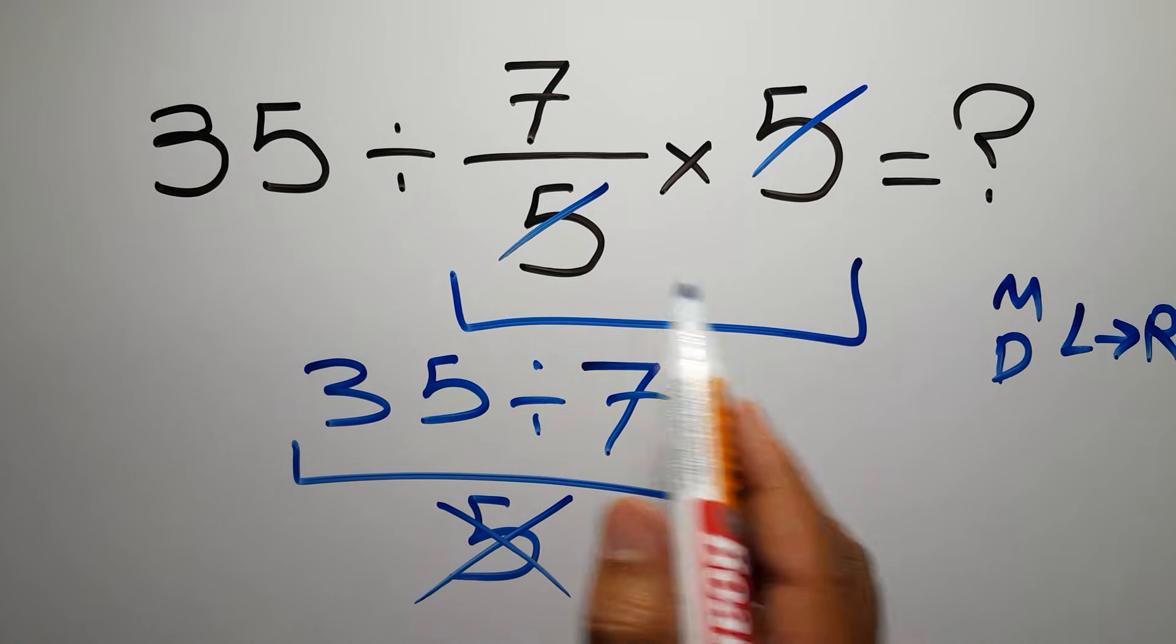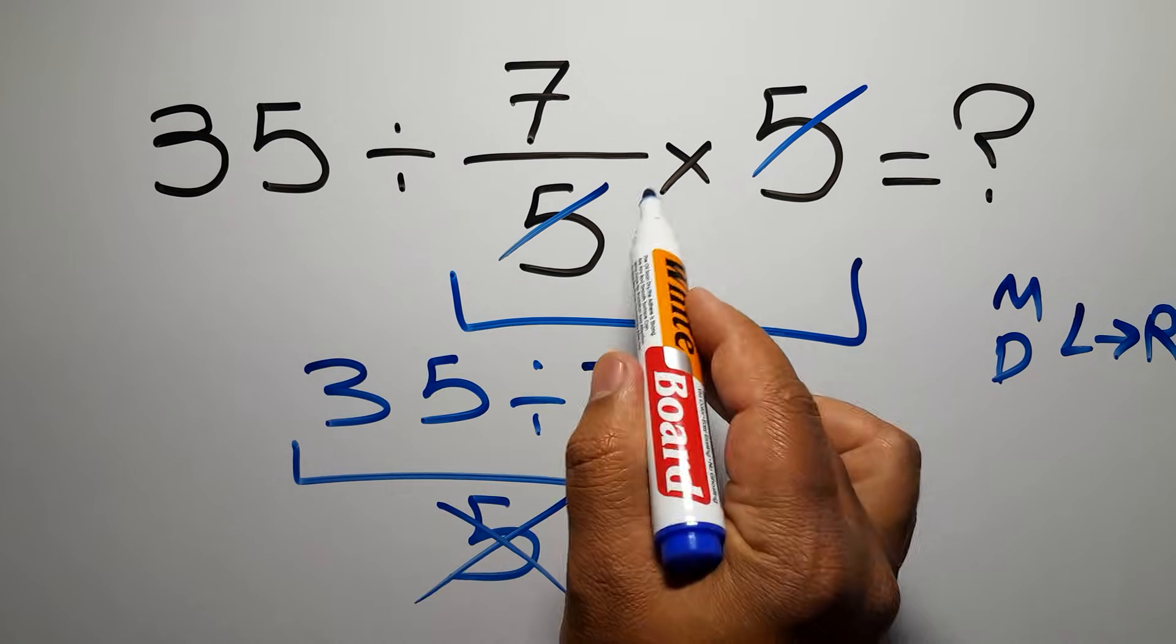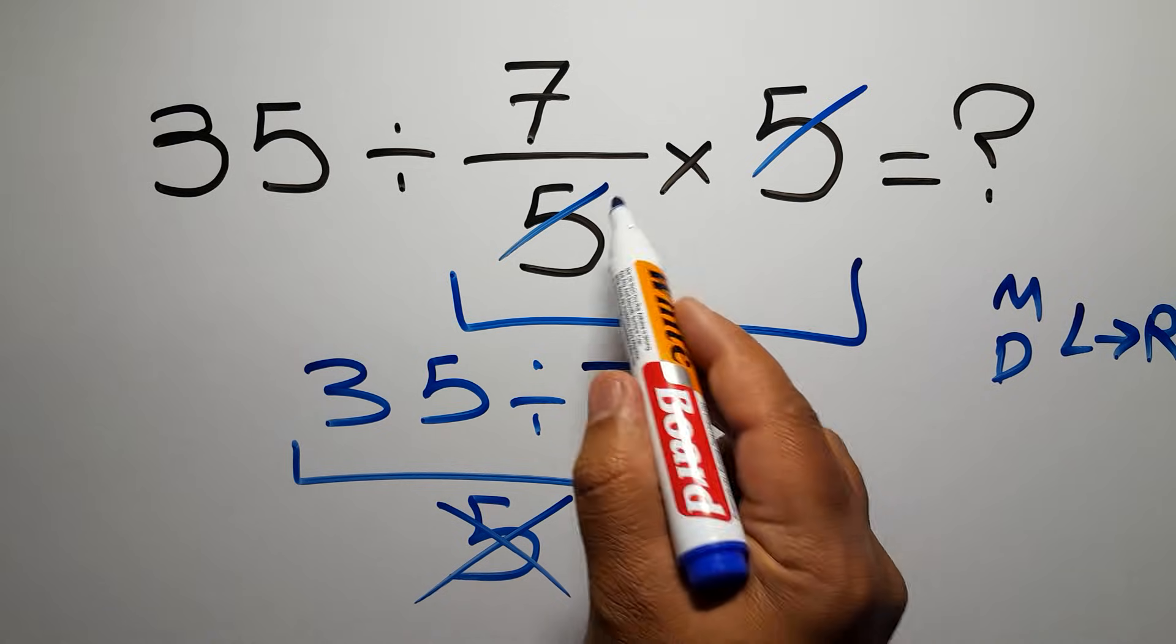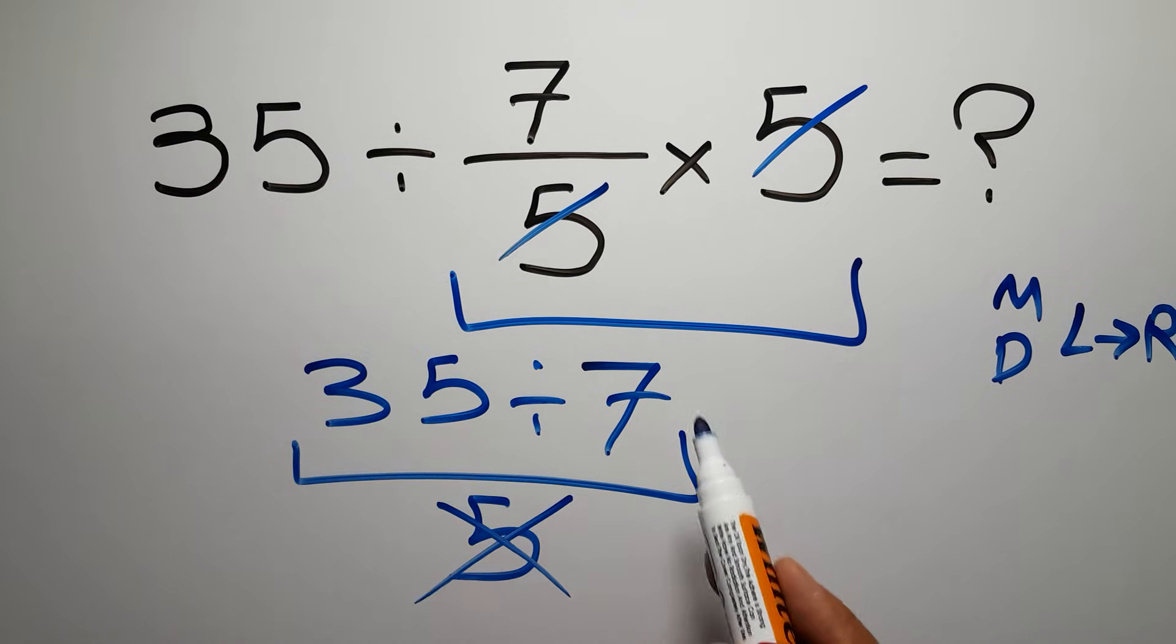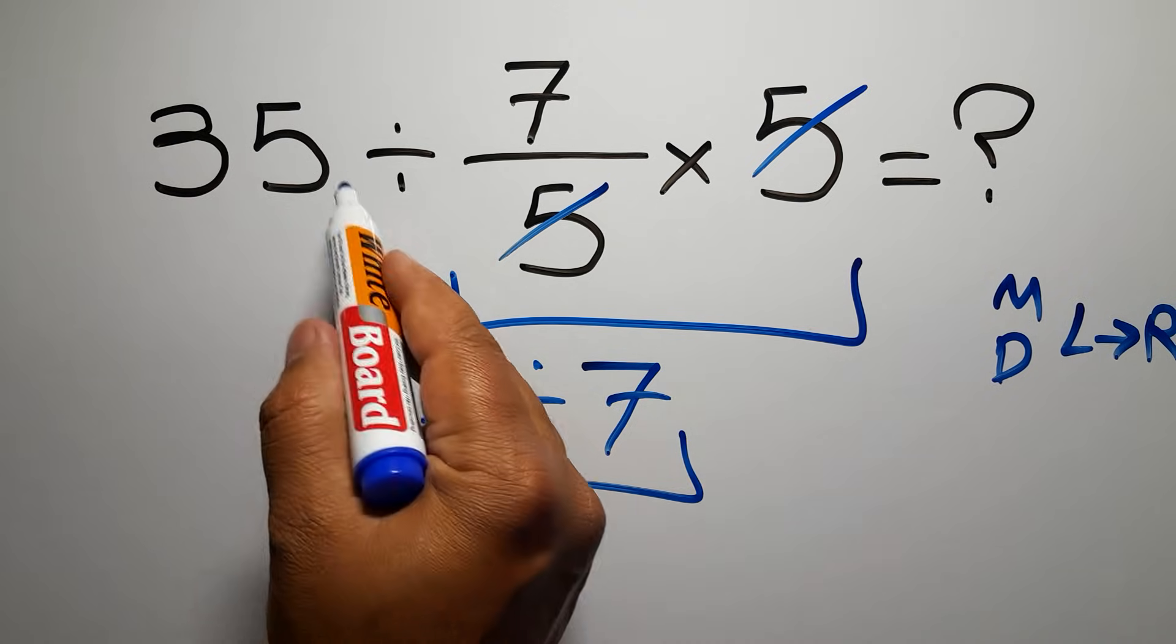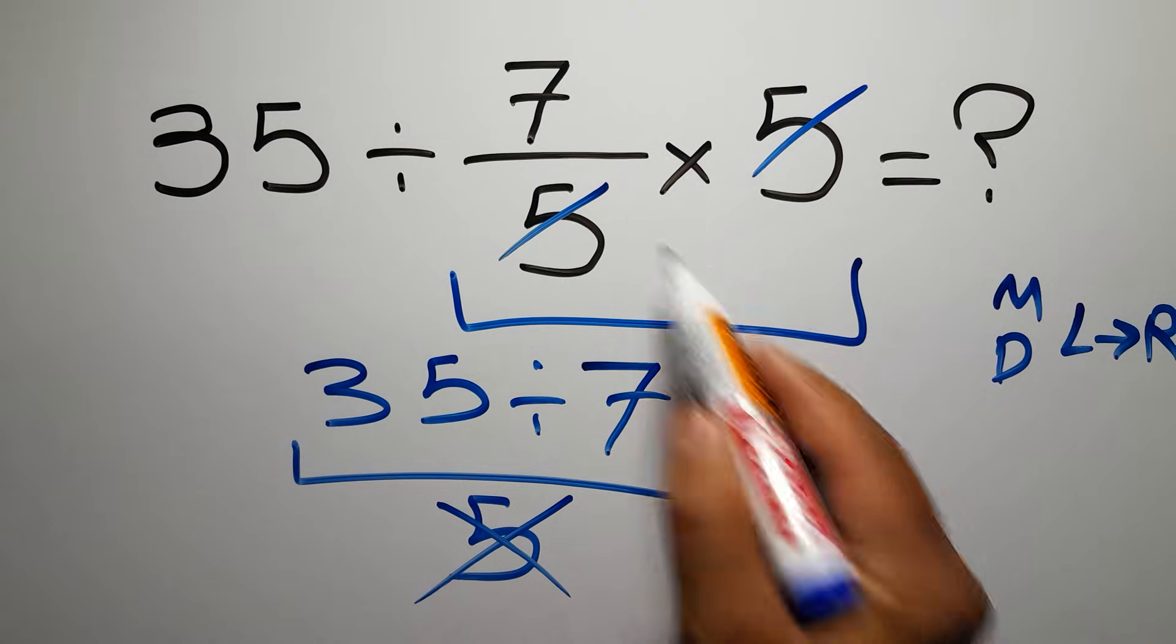So here first we have to do this division, not this multiplication. If you do this multiplication before this division, it is wrong. So first this division, then this multiplication.